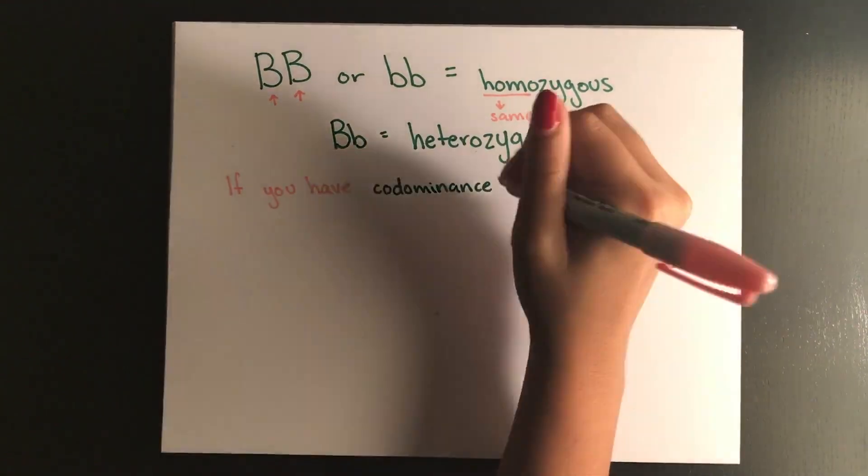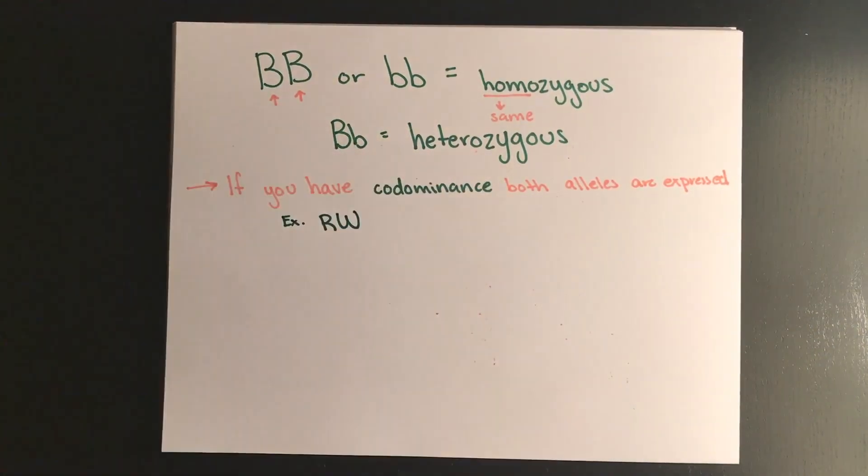Codominance, like we talked about with blood type, occurs when a heterozygous phenotype will be a mixture of traits from both alleles.